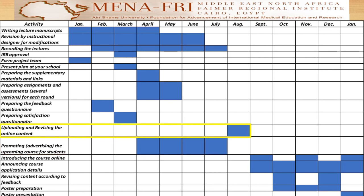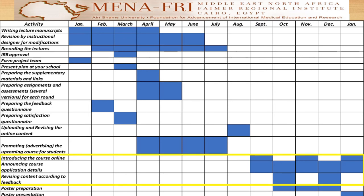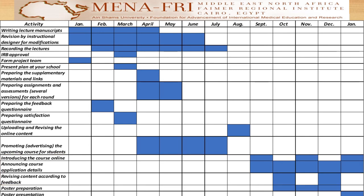By the end of August, the course is supposed to be uploaded on Moodle. From September to January, the course will be implemented every other month and modified according to the feedback results. Finally, poster preparation and presentation will start in October and will be accomplished in January.